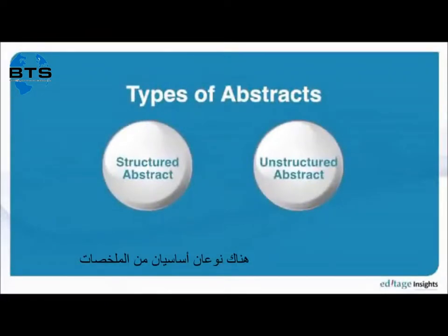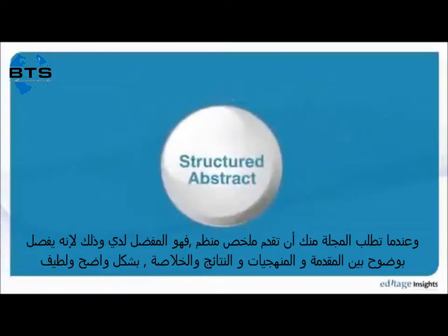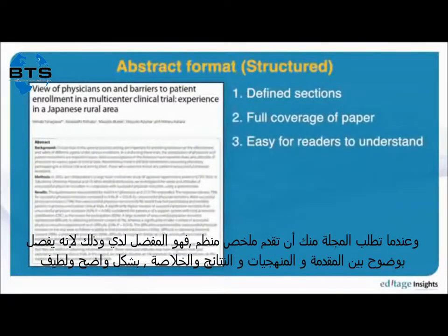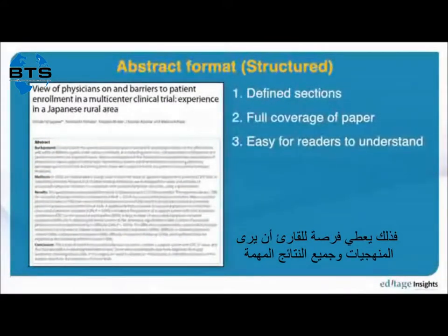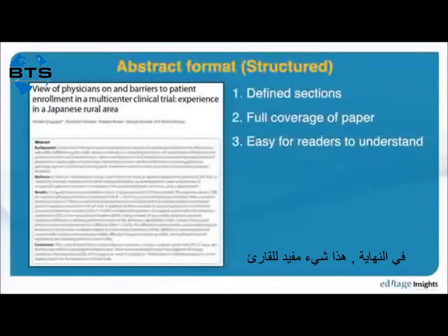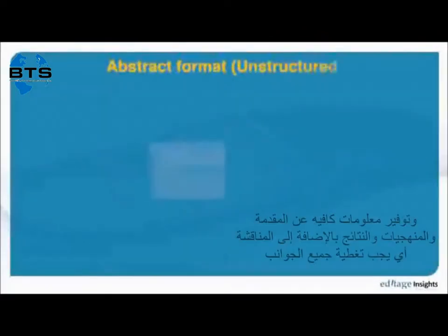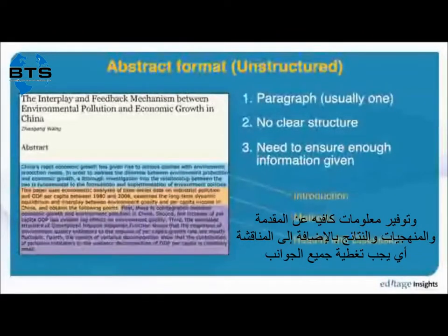There are two main types of abstract. When the journal tells you to provide a structured abstract, this style very clearly separates background, method, results, and conclusion — very clear. The reader can see the method, the results, and the final point. But even when it's not a structured abstract, you still need to provide balanced coverage — information from your introduction, methods, results, and discussion.